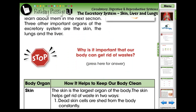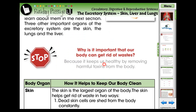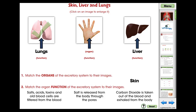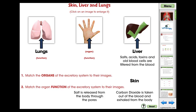A stop cue is provided to ensure students are comprehending the content. The skin, liver, and lungs activity is an engaging app to support the comprehension of the content in the reading passage. Students drag the organs to their matching images, then drag organ functions to their matching organs.